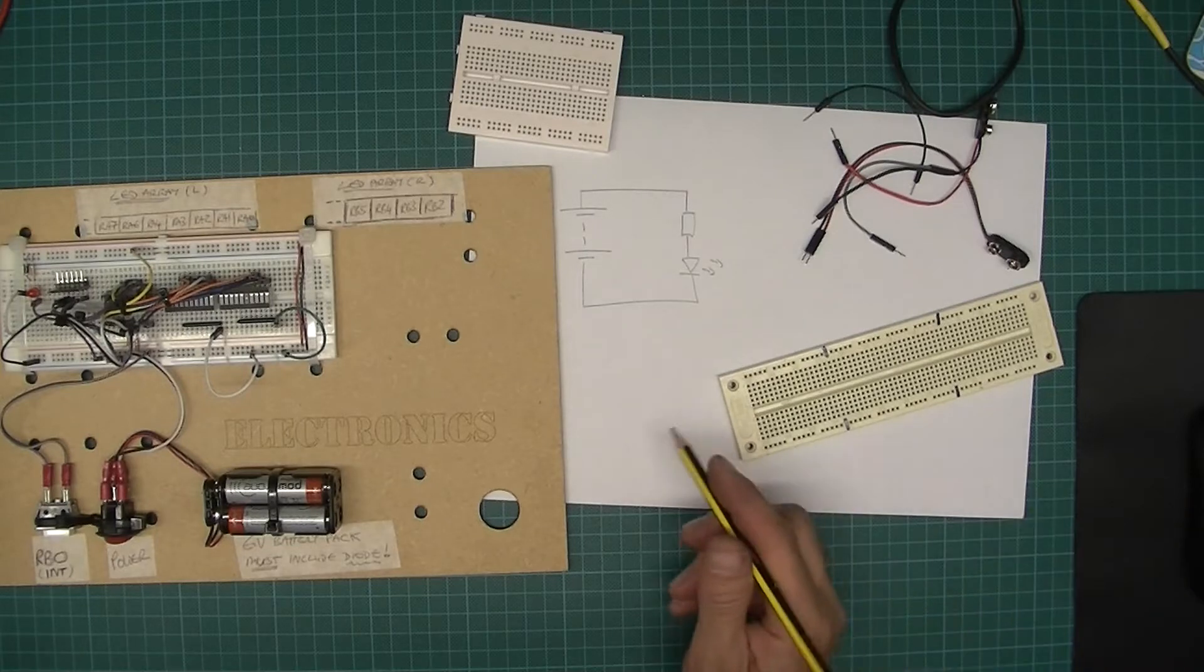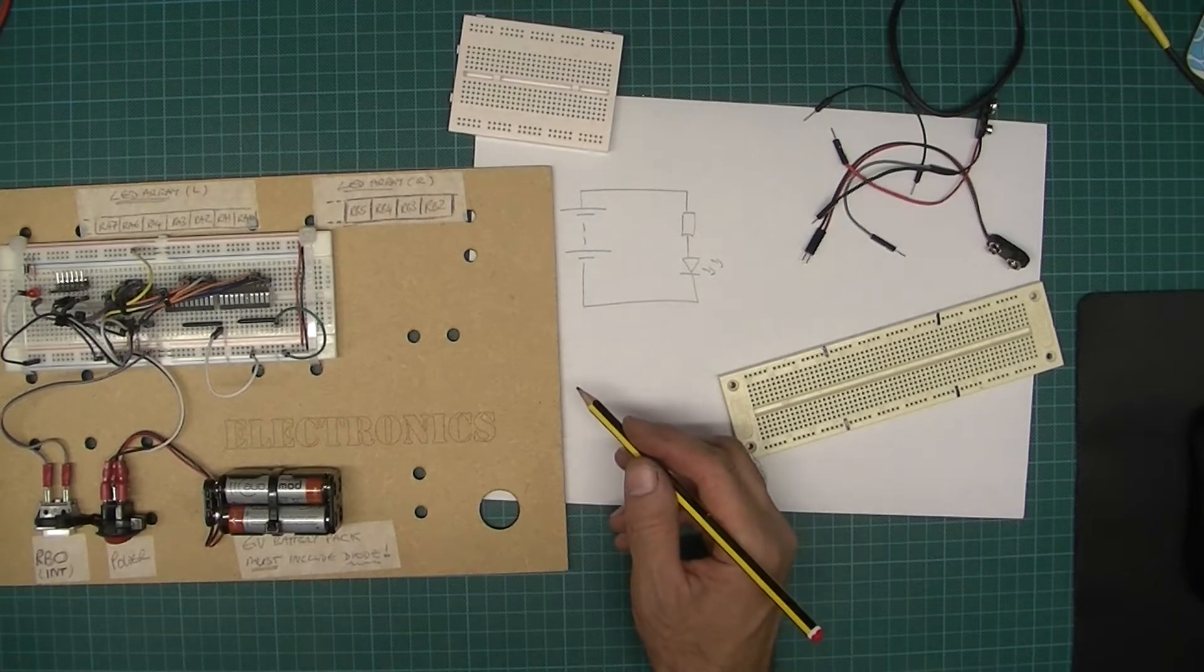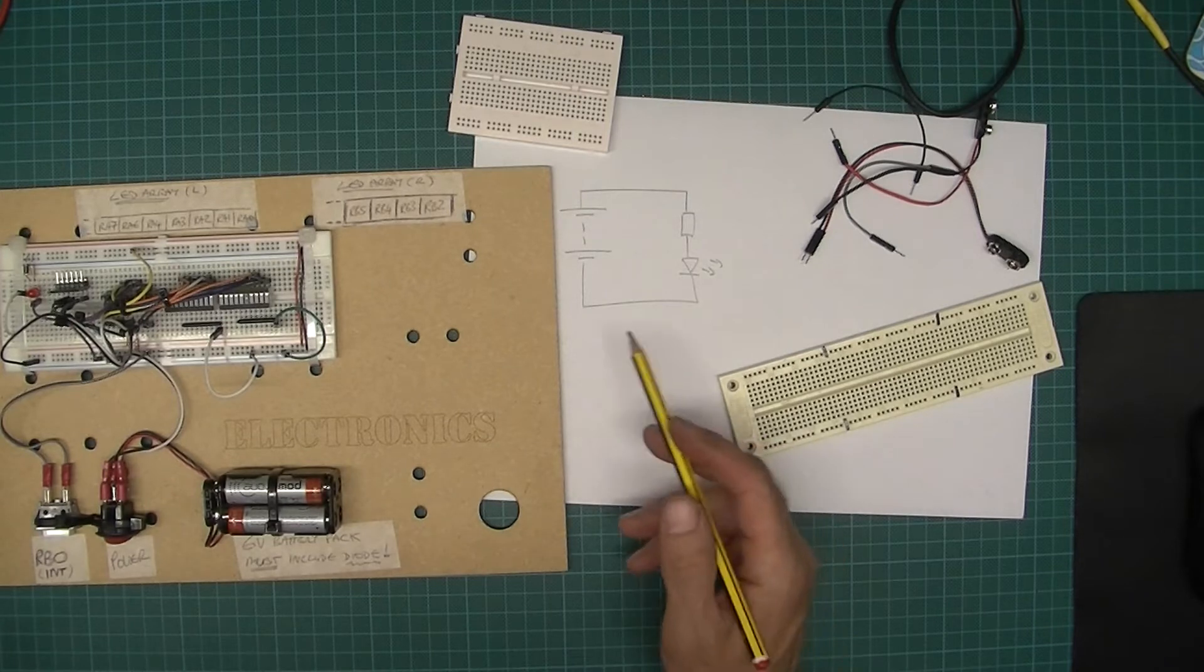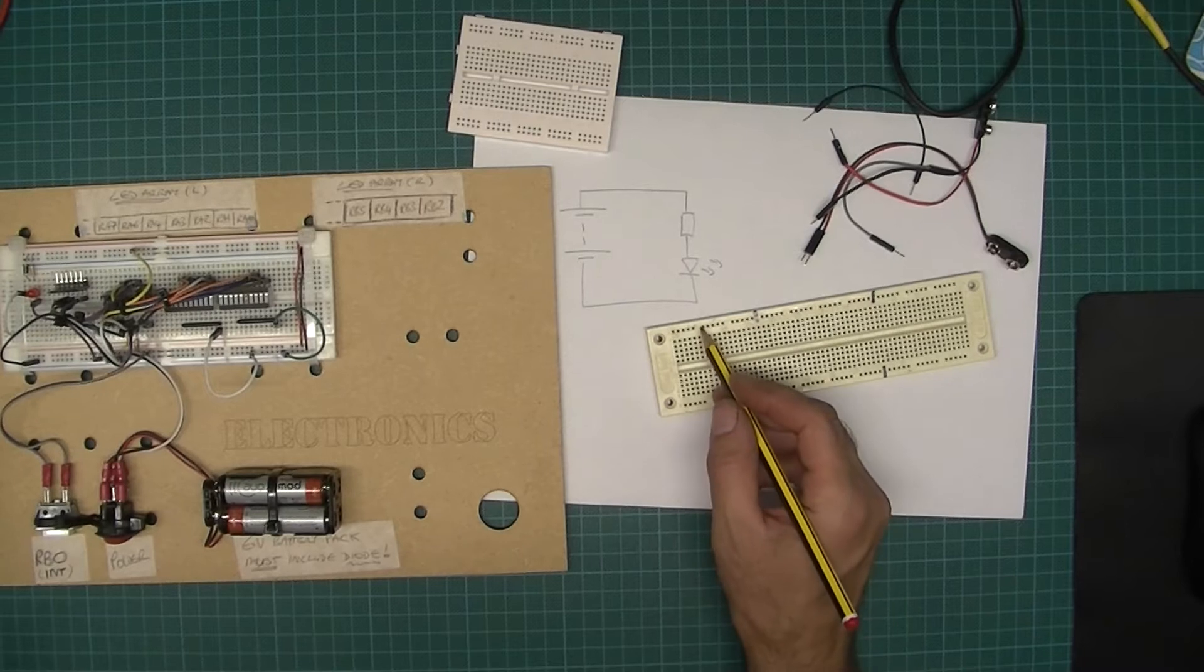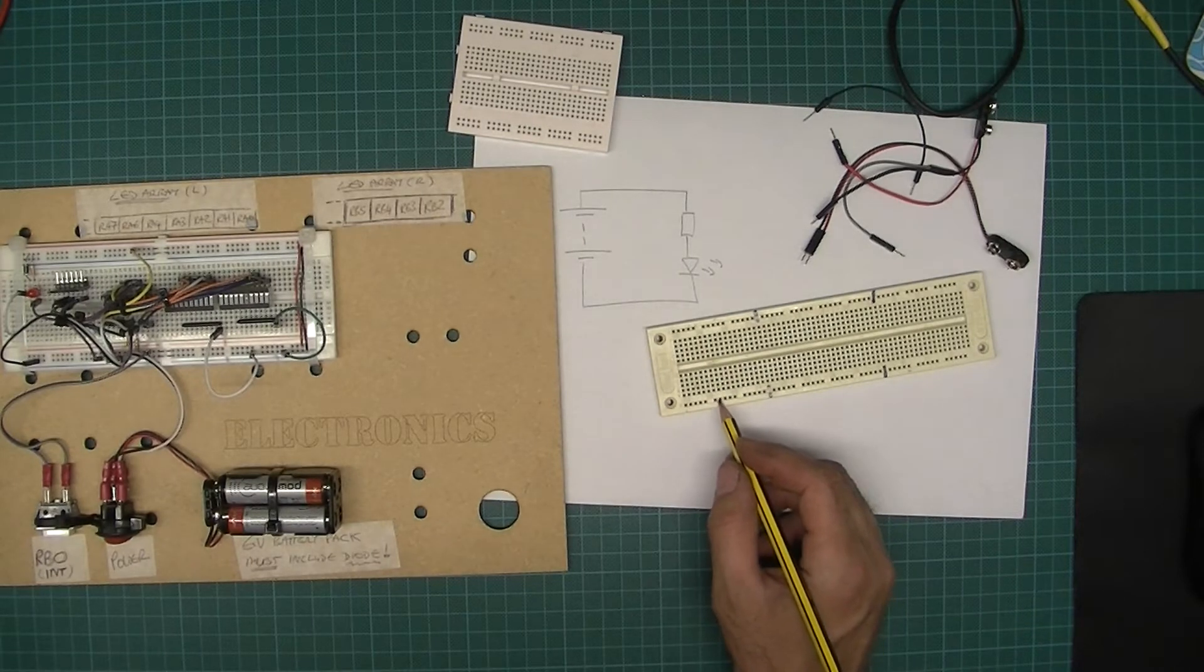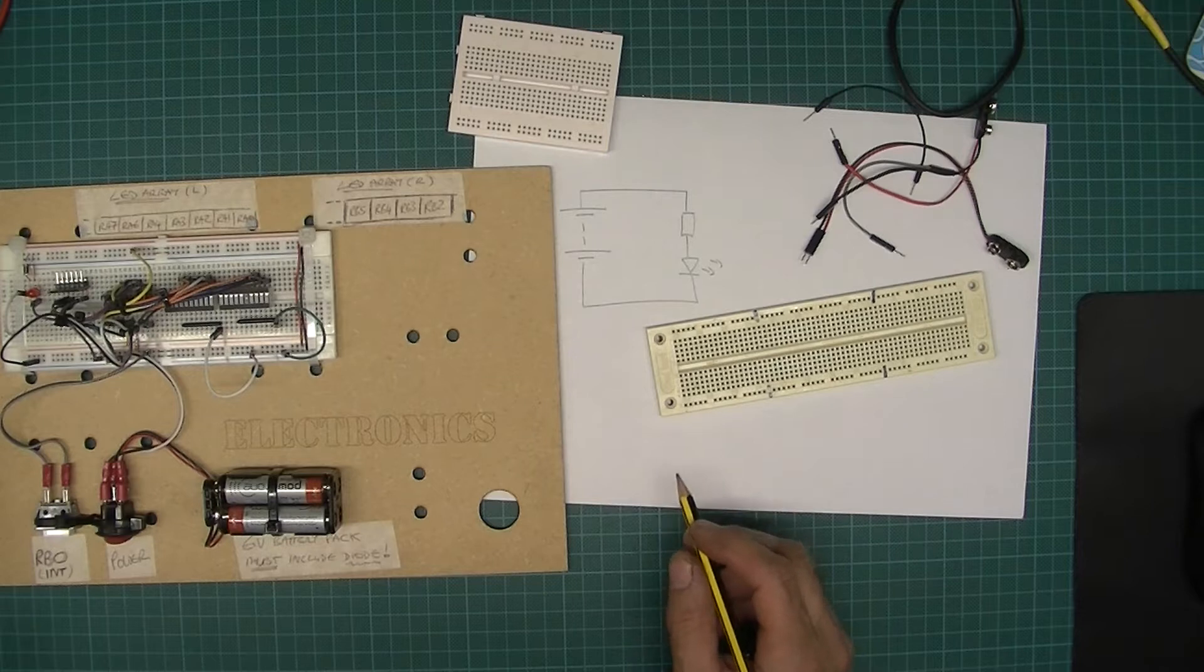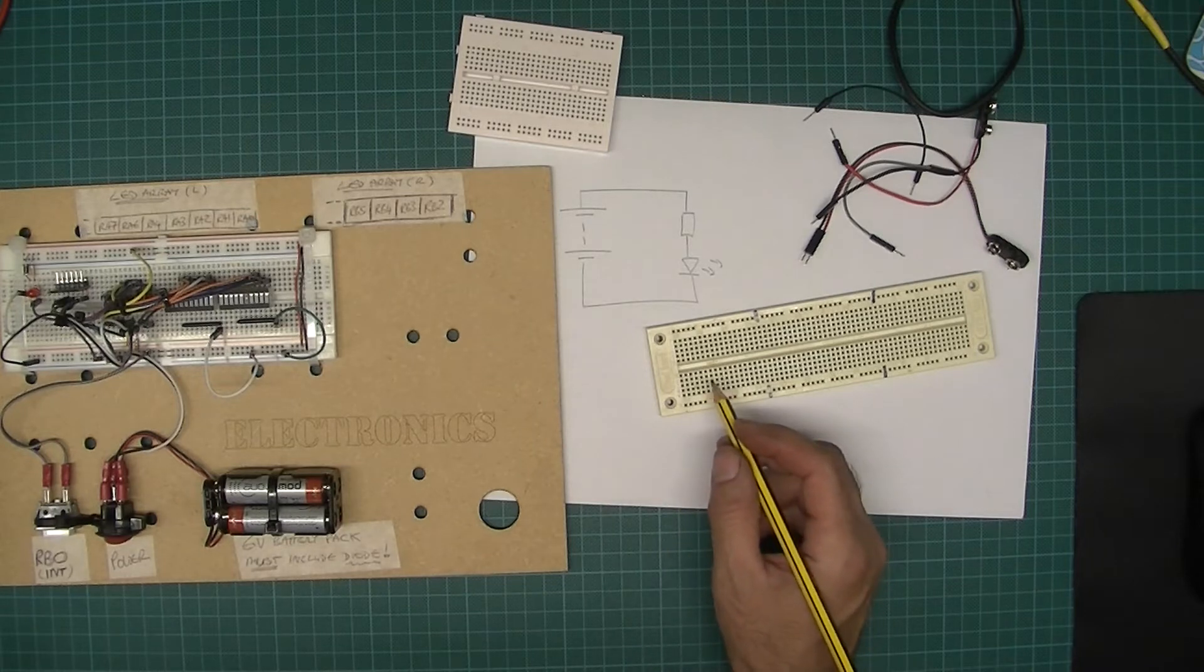Hi, this is going to be a very quick video that's a response to a question from a student. The question was: when using a breadboard, do we have to have the positive supply up the top and the zero volts down the bottom? The short and simple answer is no, you don't have to do that.